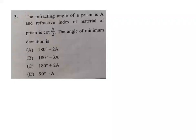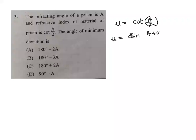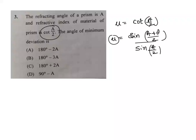Next problem: the refracting angle of a prism is A and the refractive index of the material is cot(A/2). Find the angle of minimum deviation. Using the formula: mu equals sine((A + delta)/2) divided by sine(A/2). Substituting mu as cot(A/2).